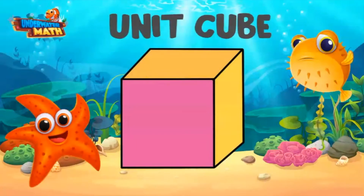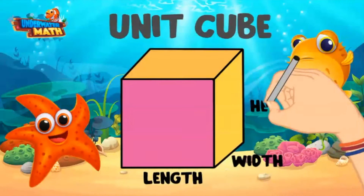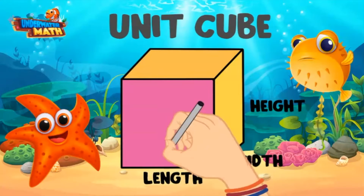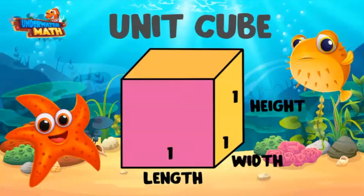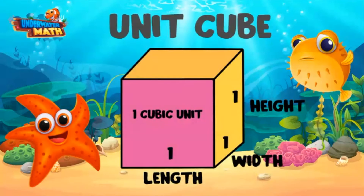First, let's take a look at a unit cube. This might look familiar — you might have used these in class or maybe in that video game Mathcraft. This cube has three dimensions: length, width, and height. Since it is a cube, all sides are the same length. For a unit cube, each side is one unit, and the volume of the unit cube is one cubic unit.